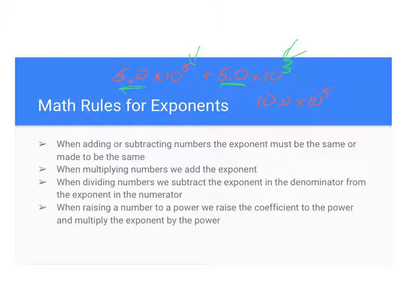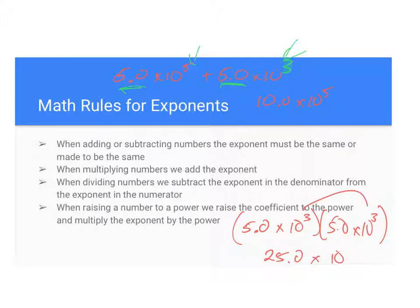So adding and subtracting, exponents have to be the same. Multiplying numbers, we're going to add the exponents. Okay, and so what that looks like is, we have 5.0 times 10 to the third, we'll put parentheses, times 5.0 times 10 to the third. That's going to give us, five, we multiply the coefficients, so we get 25.0 times 10 to the, we're going to add our exponents, times 10 to the sixth.